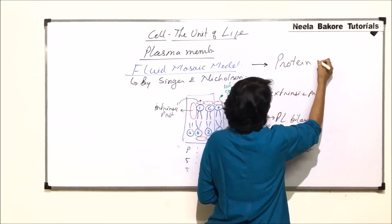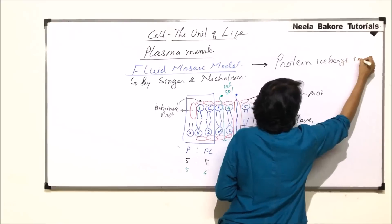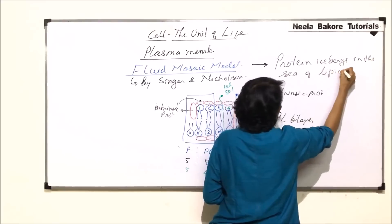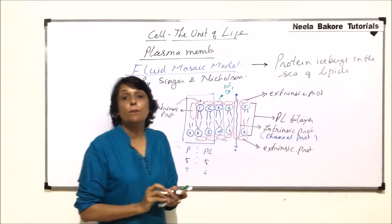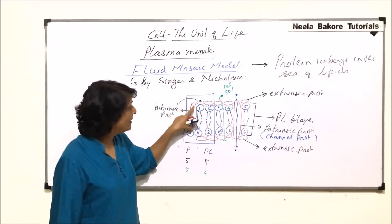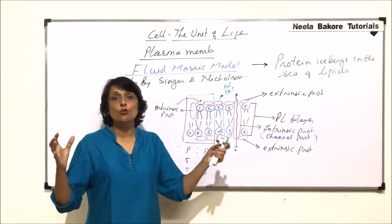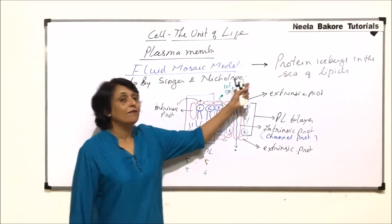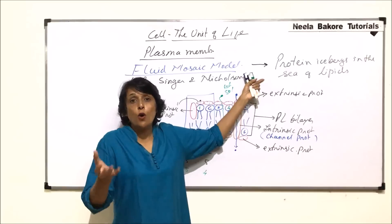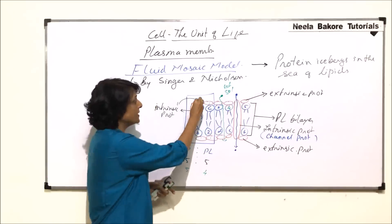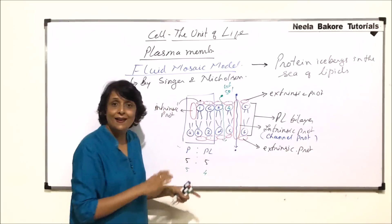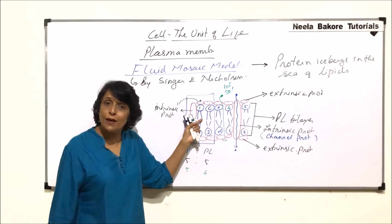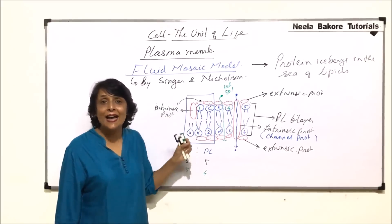That means they are comparing the proteins with icebergs and the lipid with sea. Icebergs are huge chunks of ice and they're floating in the water. And why are they able to float? Because water is fluidic. So if one thing is able to move on the other layer, that other layer has to be fluidic. And if it is fluidic, it is flexible, it is dynamic.